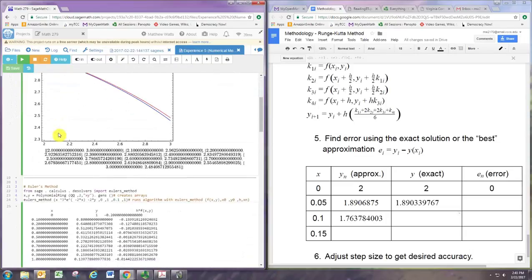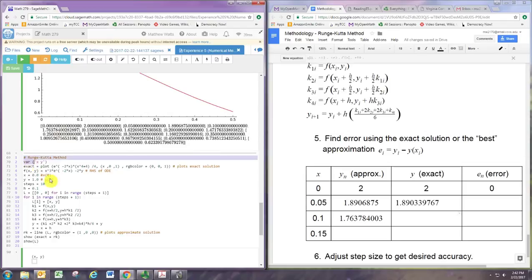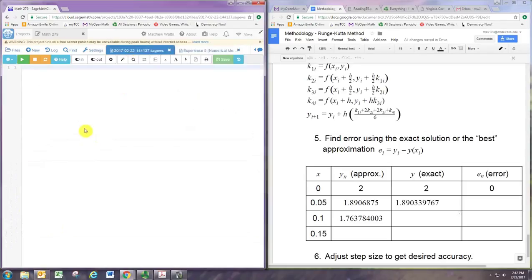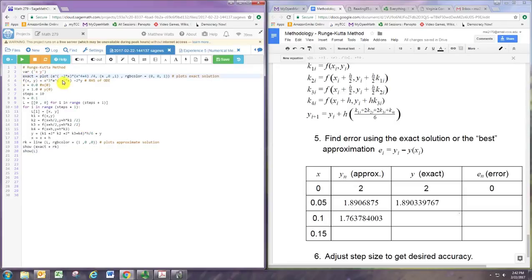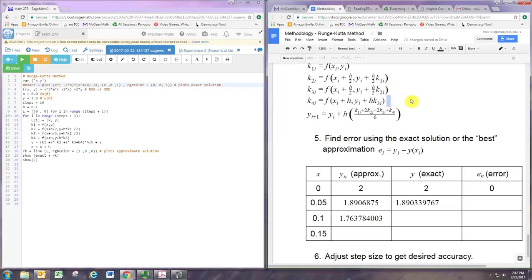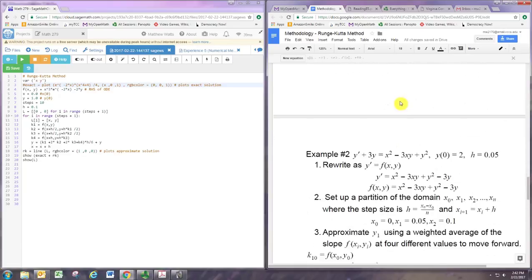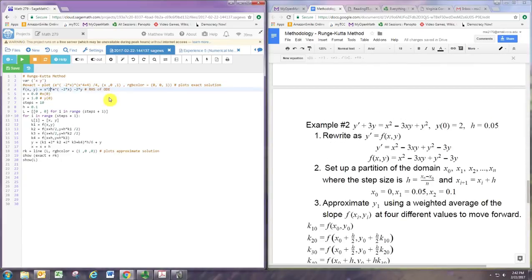So I'm going to pull up the numerical methods with SAGE file and scroll down to where it says Runge-Kutta. Go ahead and take that, paste it here, and then we'll just edit it. So we don't have an exact solution, so we'll comment that out. The right side is x squared minus 3 times x times y, plus y squared minus 3 times y. And we start off at 0, 2, and h is 0.05. We'll just take five steps. You don't have to edit any of that other code, but we do want to take exact out of the graph, because we don't have the exact solution.